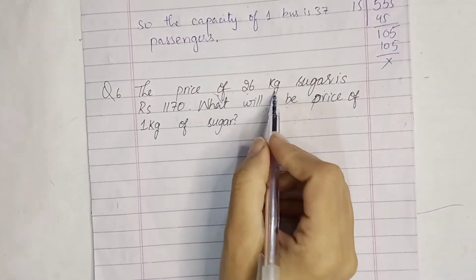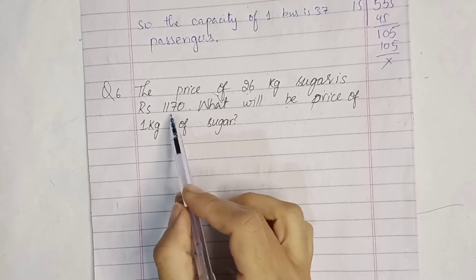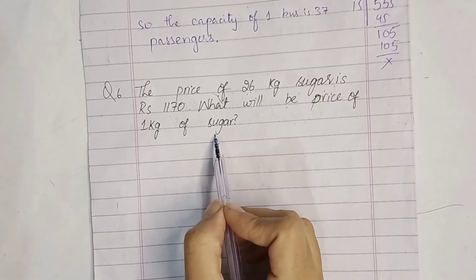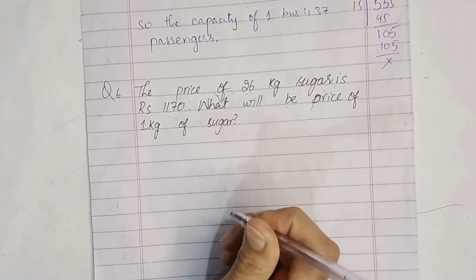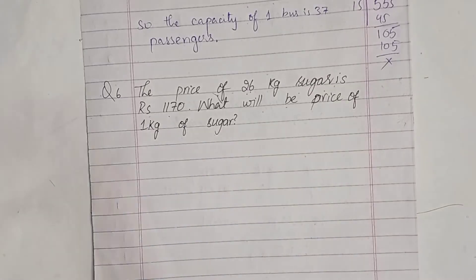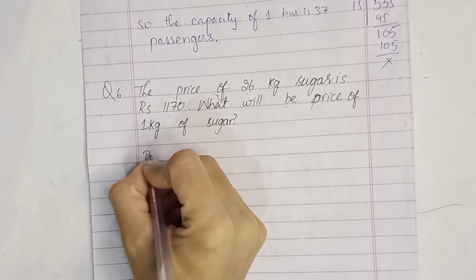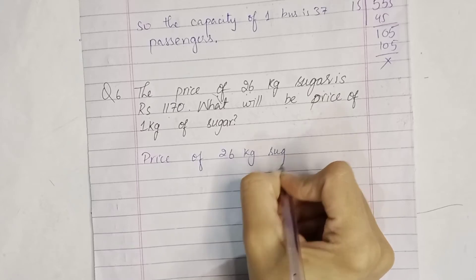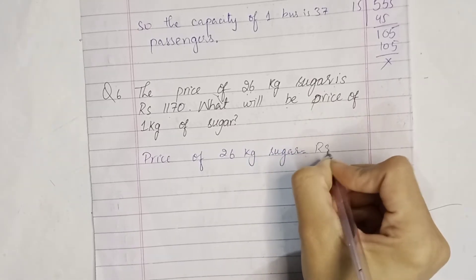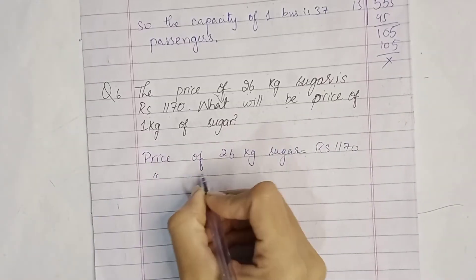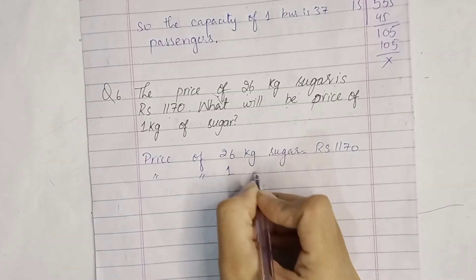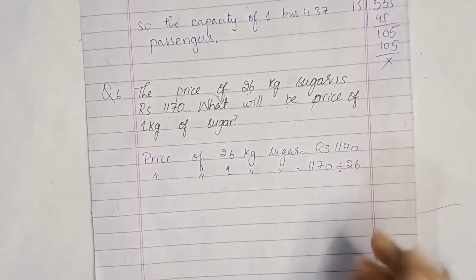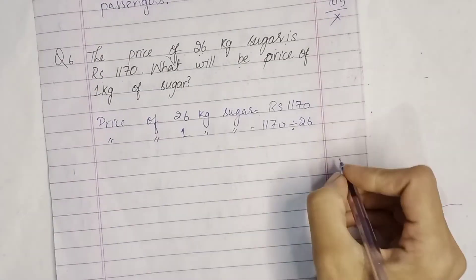The price of 26 kg sugar is rupees 1170. What will be the price of one kg of sugar? Ab hum ne price find out karni hai ek kg ki. The price of 26 kg sugar is rupees 1170, and the price of 1 kg sugar is 1170 divided by 26.